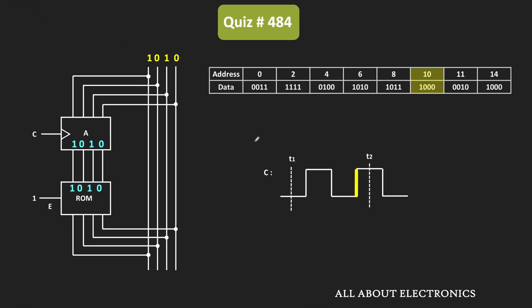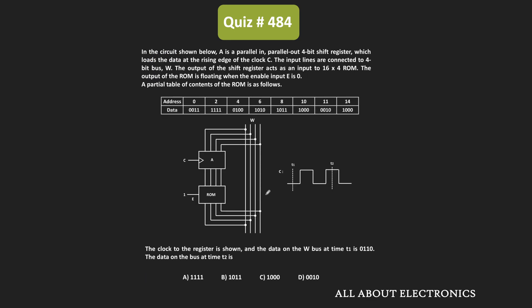That data will be available at the output. That means after the second clock edge, the data on the data bus is 1000. If we look at the data on the data bus at time t2, it will be equal to 1000. So for the given circuit, the data available on the data bus at time t2 is 1000.